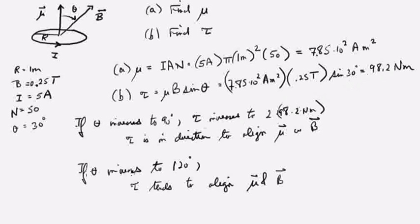If theta increases to 120 degrees, the value of the torque will be somewhat smaller, but still will be in such a direction as to align mu and B.